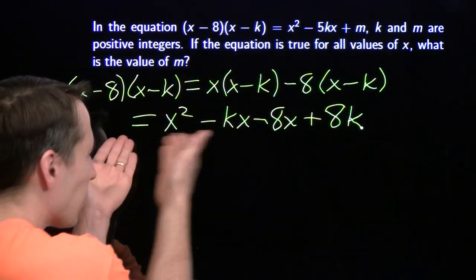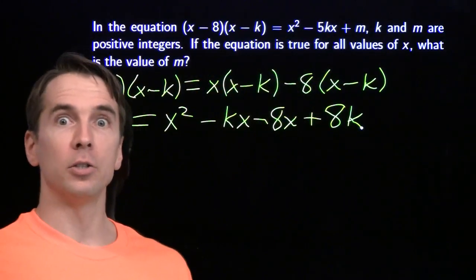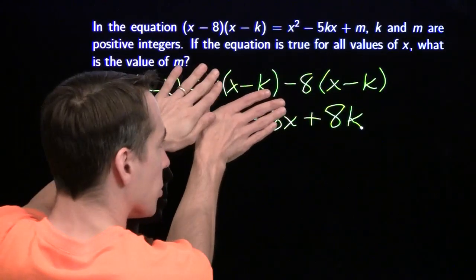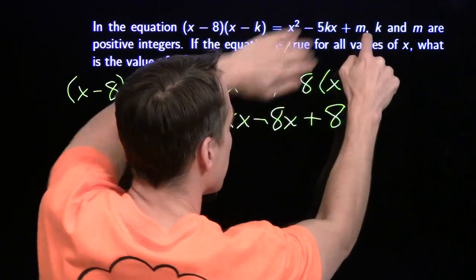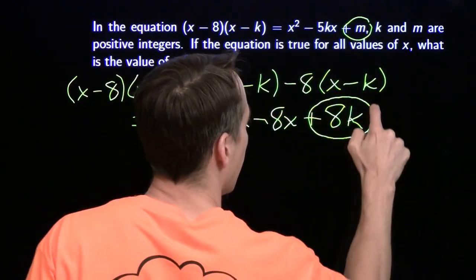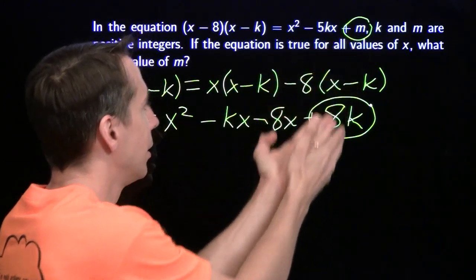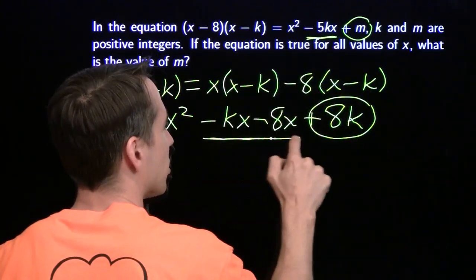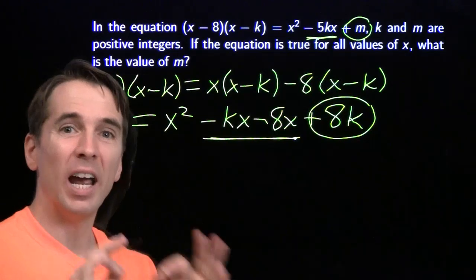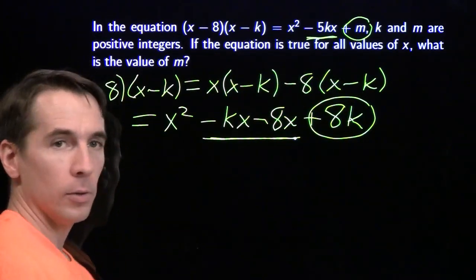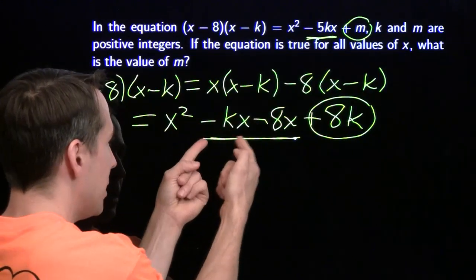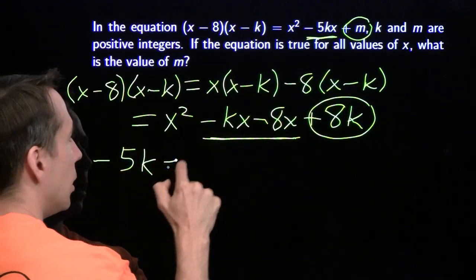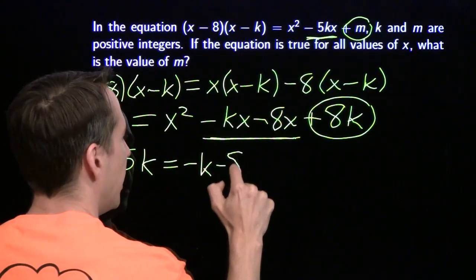Now we're told that this quadratic is the same as that one for all values of x. Well, I know one particularly convenient one to choose, and that is 0. If we put in 0, all these terms will go away. So that tells us that m is the same thing as 8k, which is pretty much what we expected. We'll need the x terms to be the same. That's only going to happen when the coefficients line up, when minus k minus 8 equals minus 5k.